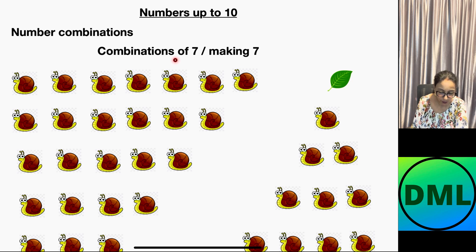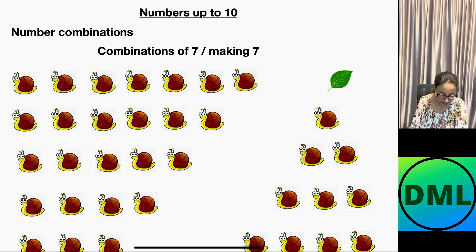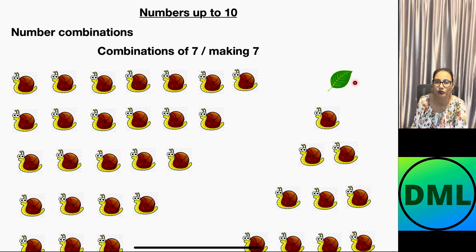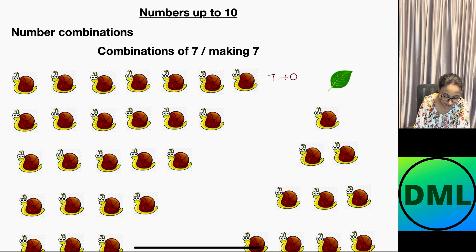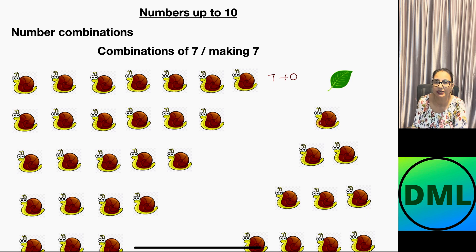As you can see, we have 7 snails here — 1, 2, 3, 4, 5, 6, 7 snails — and on the right side there is no snail. This combination is written as 7 plus 0. Next we have 6 snails — 1, 2, 3, 4, 5, 6 — and one snail is on the right-hand side.